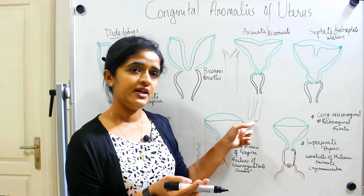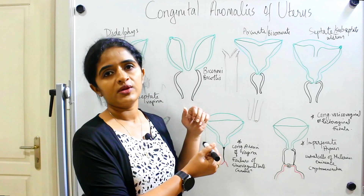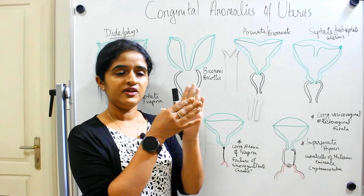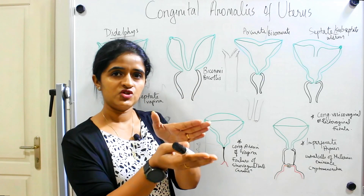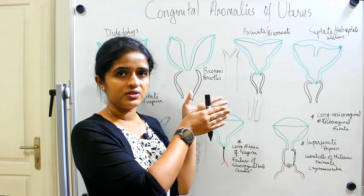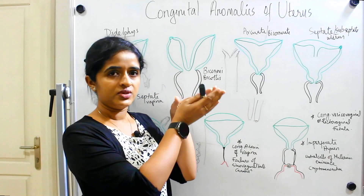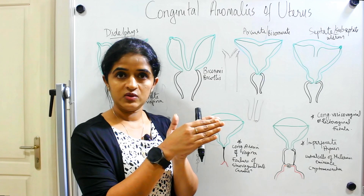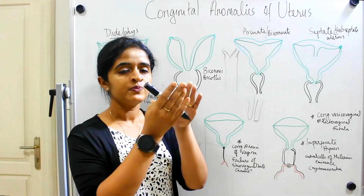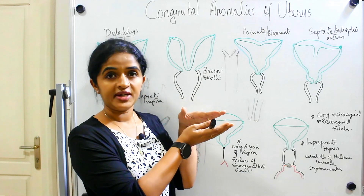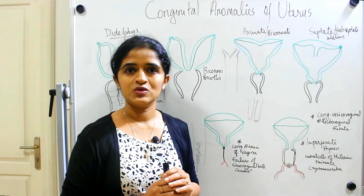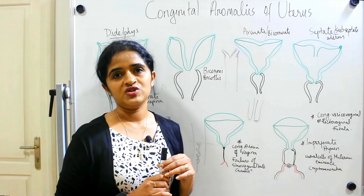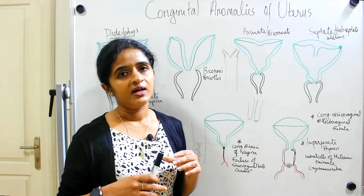Similarly, if the caudal end of the paramesonephric duct moves posteriorly instead, it opens into the primitive rectum — since the paramesonephric ducts lie in the uro-rectal septum, which divides the urogenital sinus anteriorly from the primitive rectum posteriorly. So it can open anteriorly into the bladder, posteriorly into the rectum, or ideally on the dorsal wall of the urogenital sinus. Opening posteriorly results in congenital recto-vaginal fistula.